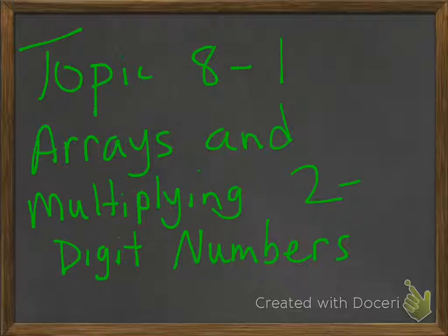So far, you've used arrays to multiply with multiples of 10 and 1-digit numbers. In this lesson, you're going to use arrays to find the product of 2-digit numbers.